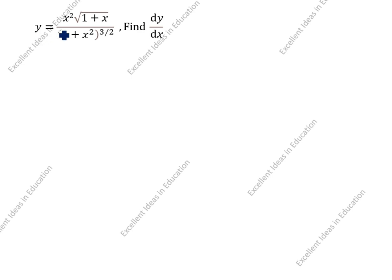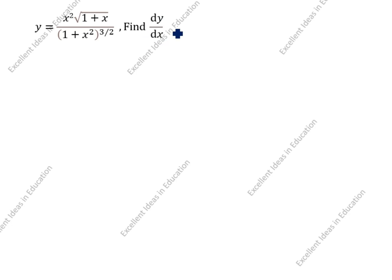Y is equal to x times the square root of (1 plus x) divided by (1 plus x squared) to the power 3 by 2. Find dy by dx. We will differentiate with respect to x in this question.